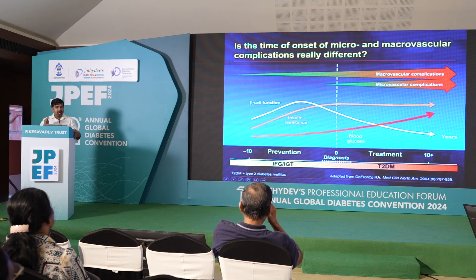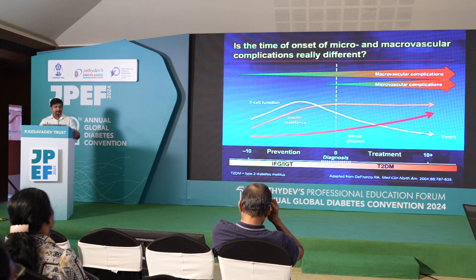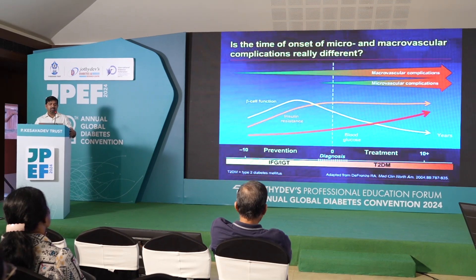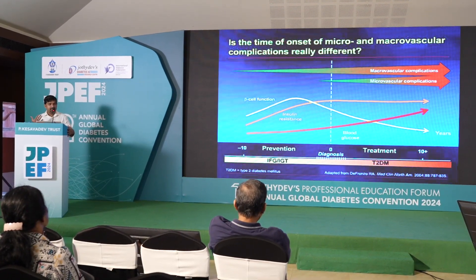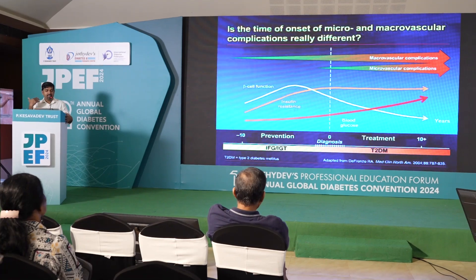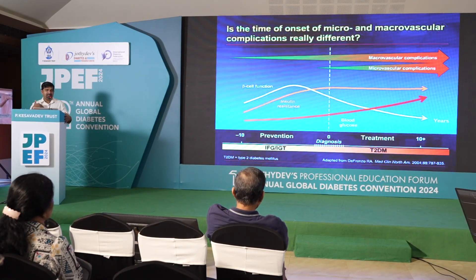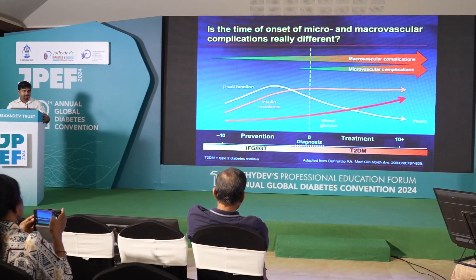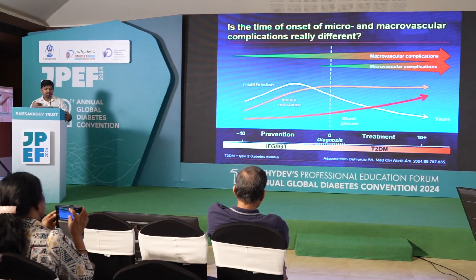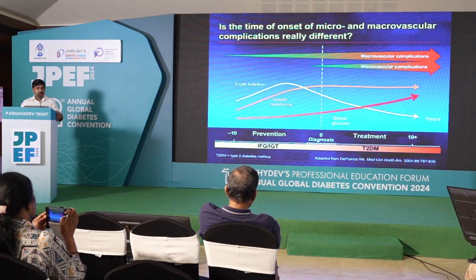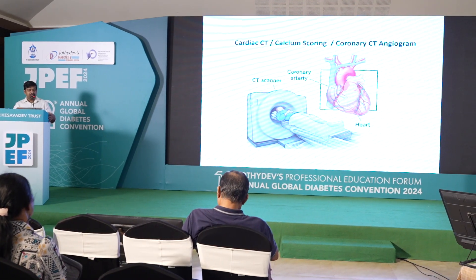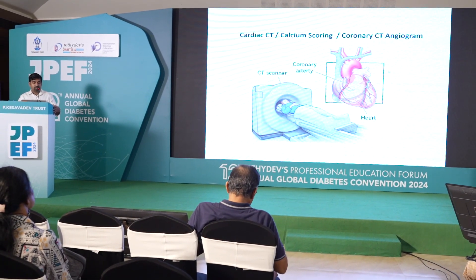TMT as such is not recommended by guidelines for asymptomatic patients. But the question of asymptomatic CAD is a little bit tricky. When to do a TMT — there is nothing specific in the guidelines, but probably it can be time-related. Maybe after five years of diagnosing diabetes, depending on how well controlled they are and based on symptoms, you can probably screen them using a TMT test.